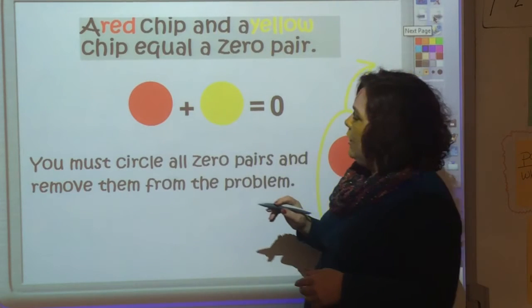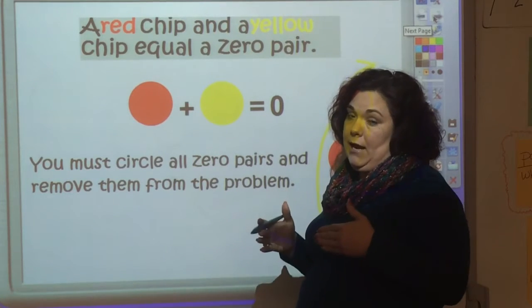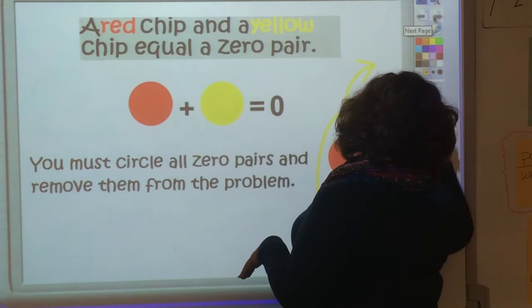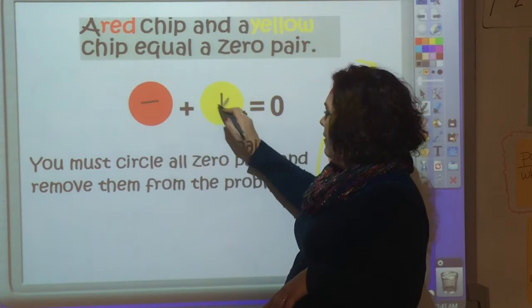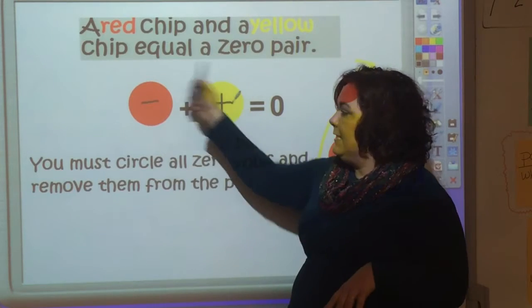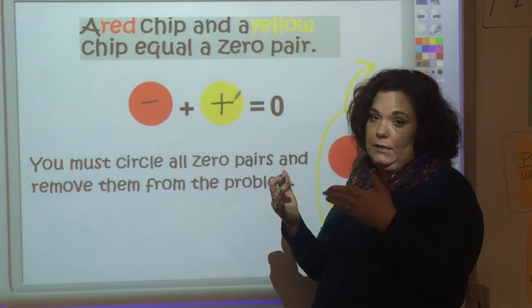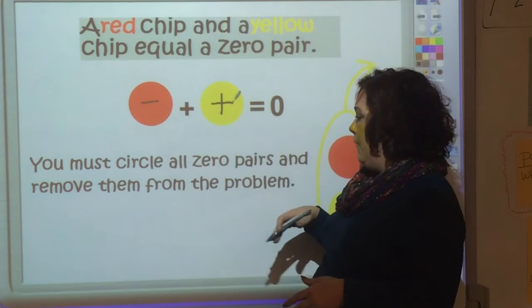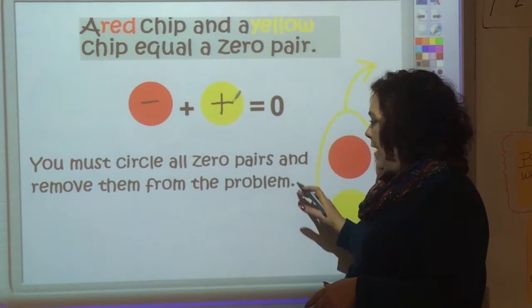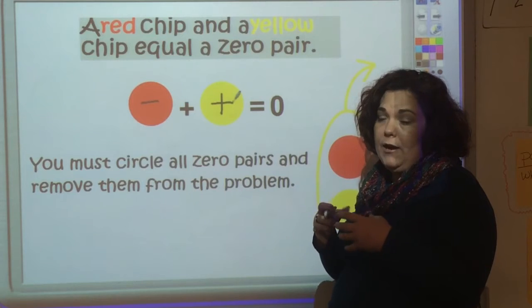A red chip and a yellow chip equal what's called a zero pair. So the red is a negative and the yellow is a positive and together they equal zero because they're opposite. If you have one negative one, they come together, they're zero. You must circle all zero pairs and remove them from the problem.